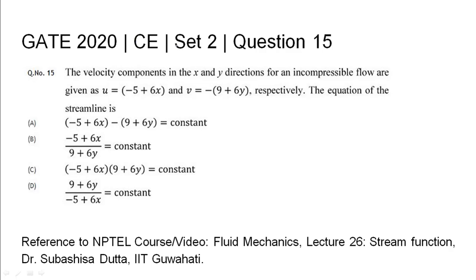GATE 2020 Civil Engineering Set 2, Question 15. The velocity components in the x and y directions for an incompressible flow are given as u equals minus 5 plus 6x and v equals minus 9 plus 6y respectively. The equation of the streamline is - four options are given and the relevant NPTEL reference is cited.